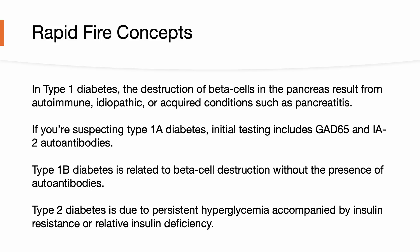In type 1 diabetes, the destruction of beta cells in the pancreas results from autoimmune, idiopathic, or acquired conditions. If suspecting type 1a diabetes, initial testing includes GAD65 and IA2 autoantibodies. Type 1b diabetes is related to beta cell destruction without the presence of these autoantibodies. Type 2 diabetes is due to persistent hyperglycemia accompanied by insulin resistance or relative insulin deficiency.